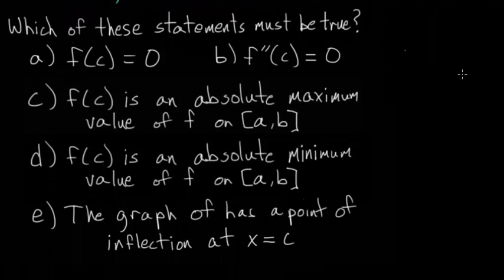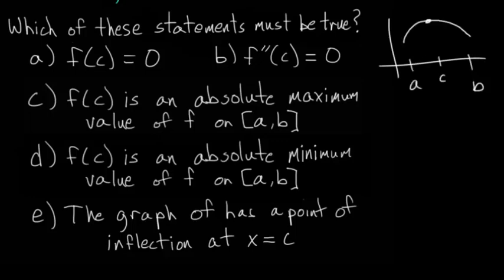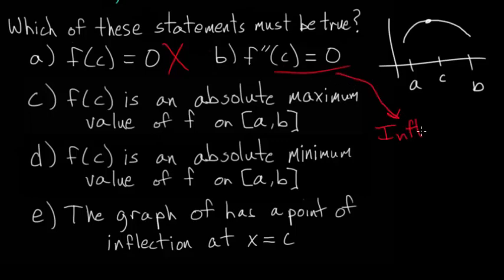Now evaluating the answer choices: the derivative at c is equal to zero, but we don't know anything about the function value f(c) itself, so we can't confirm choice A. For choice B, we were not told the second derivative at c is zero. Graphically, a second derivative of zero at c would imply an inflection point, which we don't have here — so B is not true.